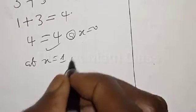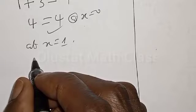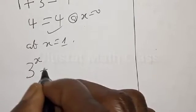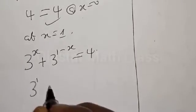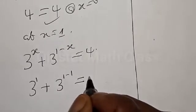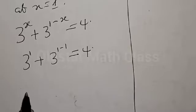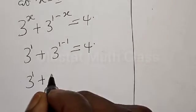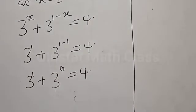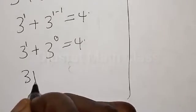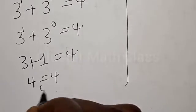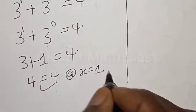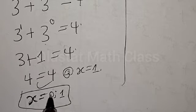Now let's check at x equals 1. The original equation: 3 raised to power x plus 3 raised to power 1 minus x equals 4. When x equals 1, we have 3 raised to power 1 plus 3 raised to power 1 minus 1, which is 3 plus 3 raised to power 0, which is 3 plus 1, equals 4. We satisfy the given equation at x equals 1. Our final answers are x equals 0 and x equals 1.